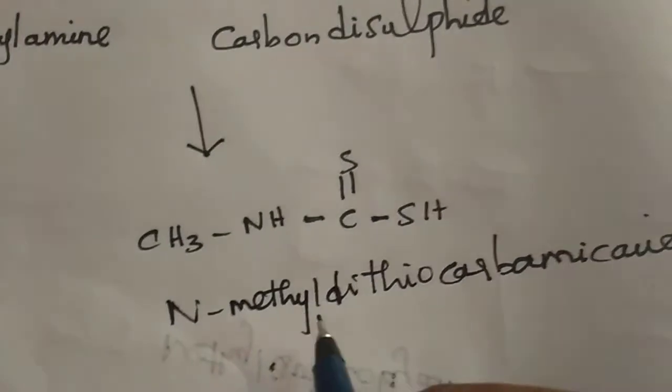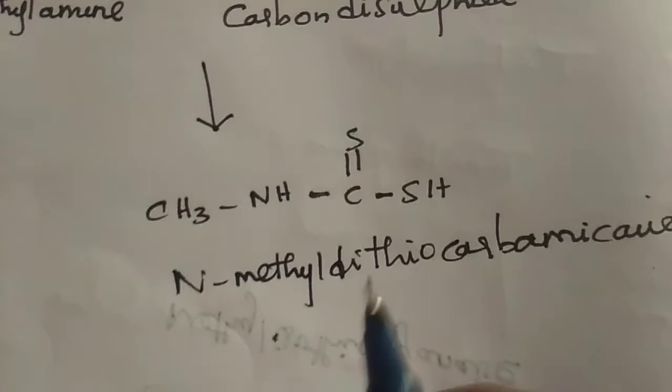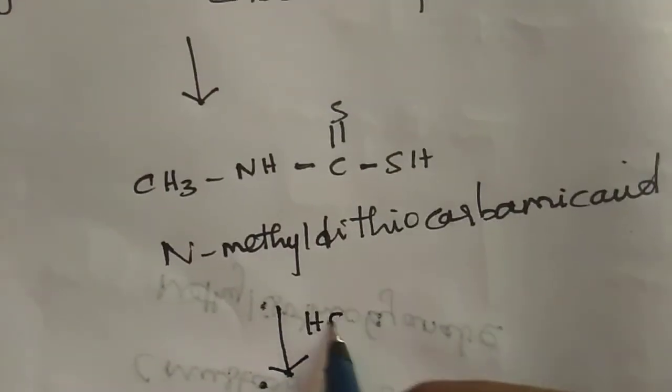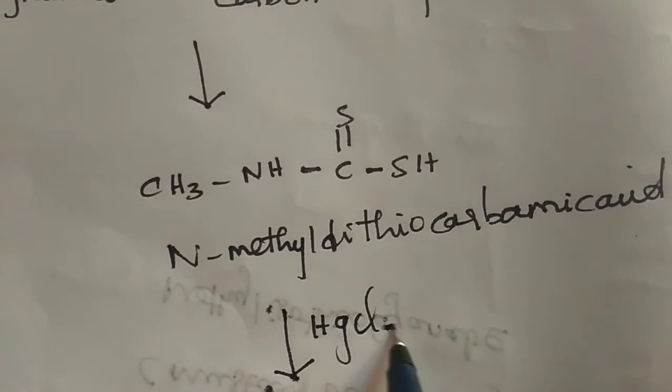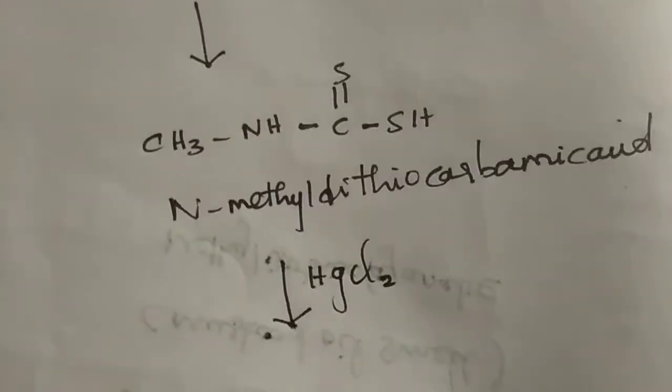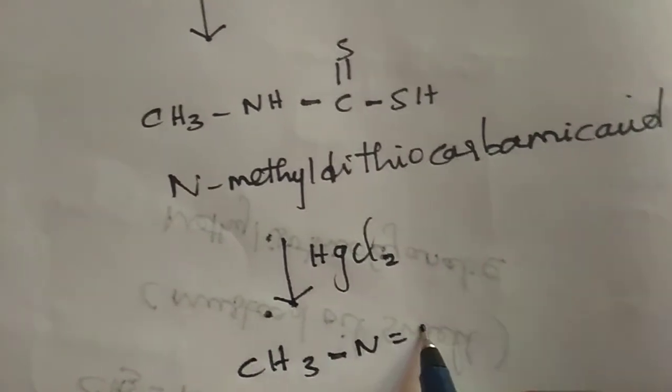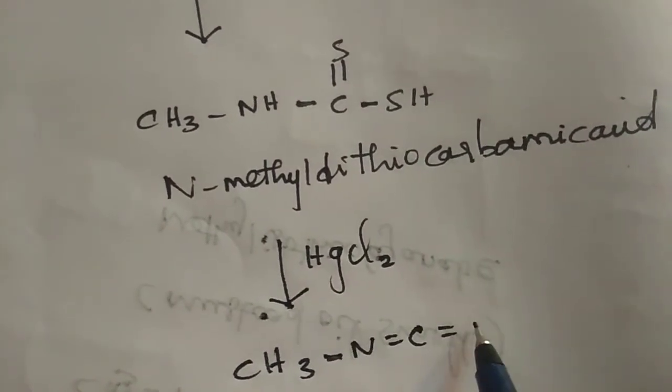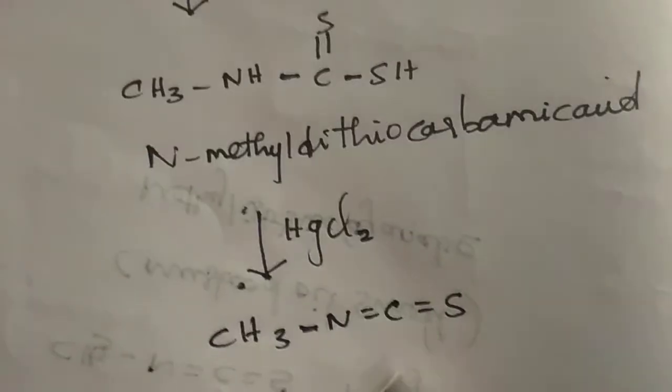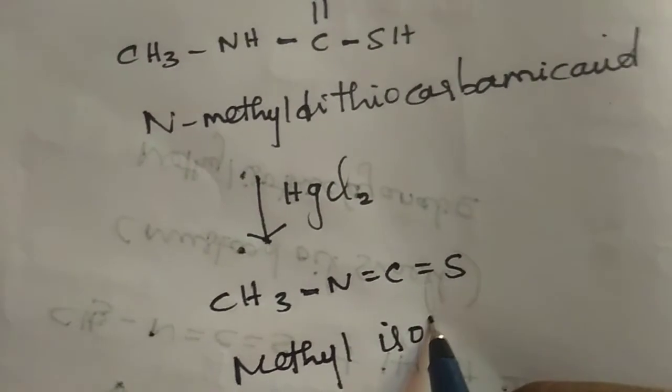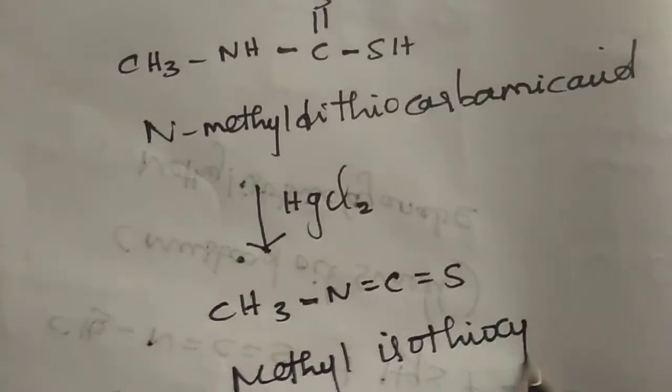N-methyl-dithiocarbamic acid is treated with mercury chloride to form CH3-N=C=S, methyl isothiocyanate.